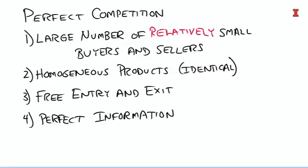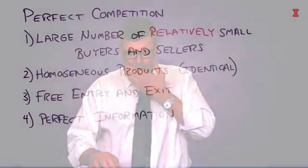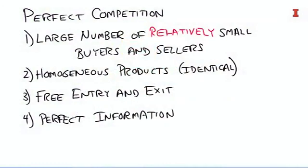I am an applied microeconomist, and what microeconomists basically do is modify these assumptions. For example, what happens if we have a market that looks fine for conditions two, three, and four, but you happen to have one large buyer or multiple sellers that are kind of big? The outcome could be wildly different.